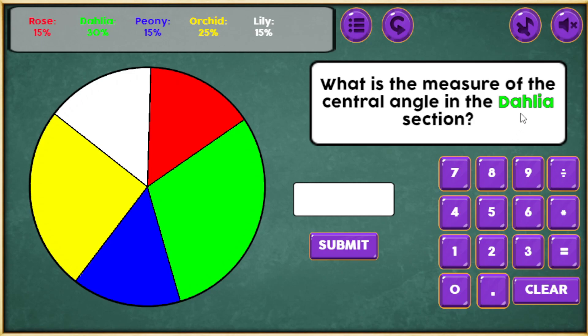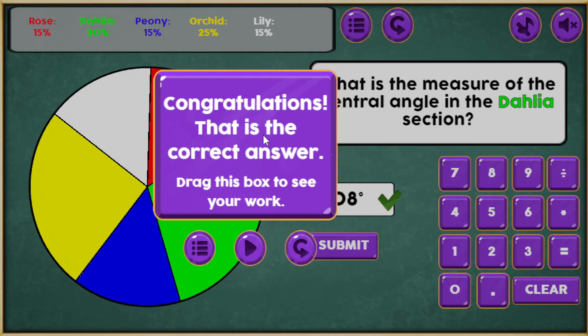And now they're wanting to know the angle of Dahlia, and it's 30 percent. And so I want to go ahead and calculate that. So I know 30 percent is 0.3 or 0.30, same difference. And I'm going to multiply it times 360, and almost hit Clear, which would clear out the values here. But let's go ahead and hit Equal, 108, Submit, and that was correct.